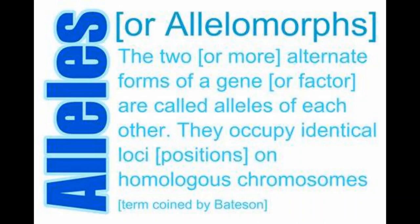An allele is one of the two or more forms of a gene controlling a pair of contrasting characters. For example, if I am tall, my allele is capital T and capital T. If I am short, my allele is small t and small t. That is what an allele is.